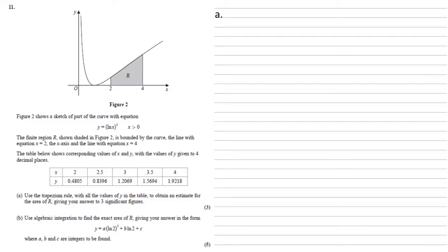The trapezium rule states that the area is approximately equal to a half times h, which is the interval size, so the gap between the x values that we have, times by the sum of the first and last y values plus two times the sum of all the y values in the middle.